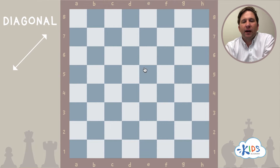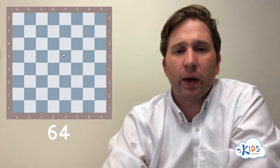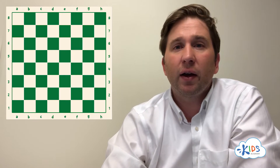Speaking of ranks and files and diagonals, let's take a moment to talk about the actual chess board. The chess board is a square and within the square there are 64 smaller squares. Half of them are light, half of them are dark. On a lot of chess boards the light squares are white and the dark squares are blue, green, or black. Really the chess board can be any two colors so long as we have a light complex and a dark complex.